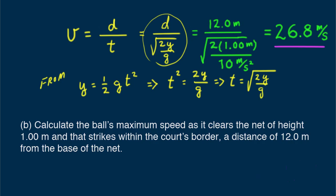I want to leave you with a question. If the net were a little higher, would the maximum speed for the ball be a little less or a little more than 26.8 meters per second?